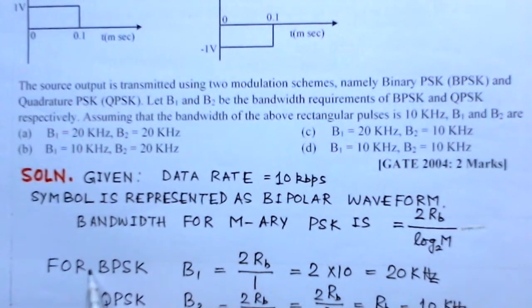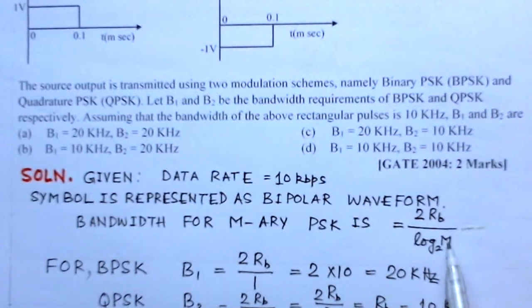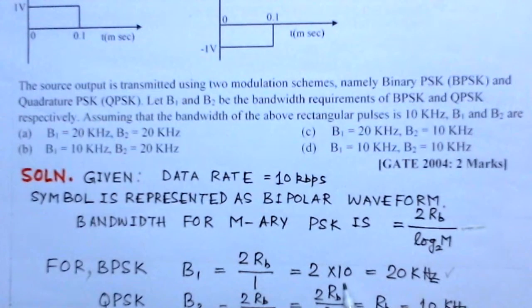So for BPSK, bandwidth would be 2RB over log M, where M is 2 (the two states). So it will be 2 times RB divided by log base 2 of 2, which equals 1. So this would be 2 times the data rate, which is 20 kilohertz.